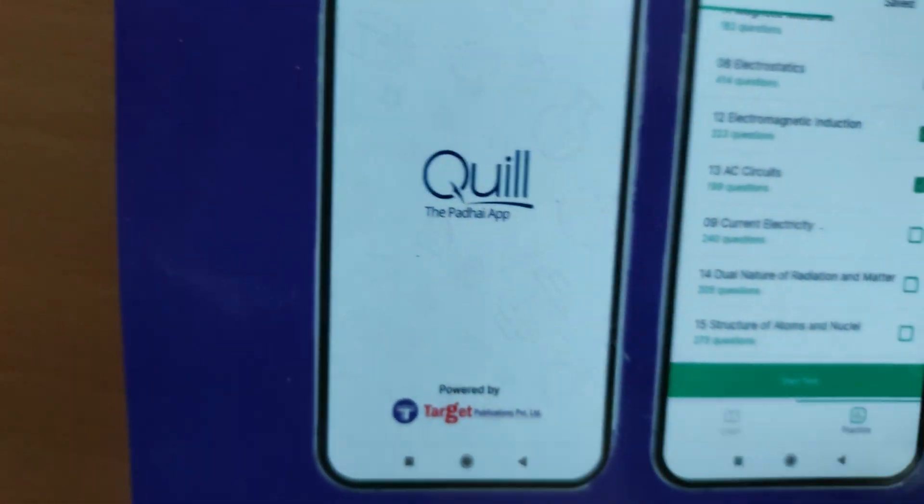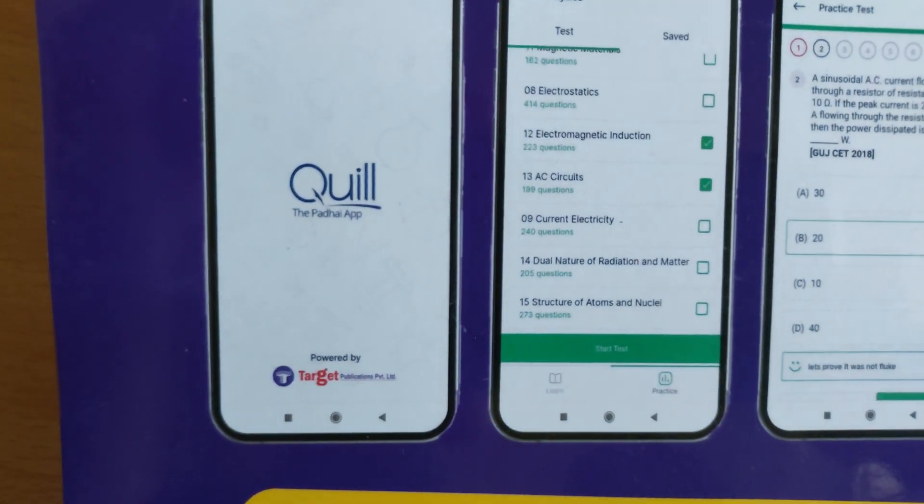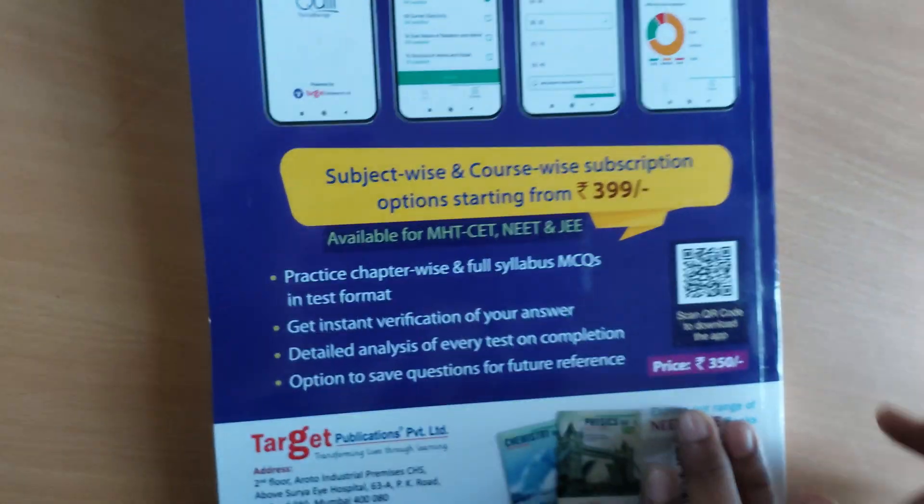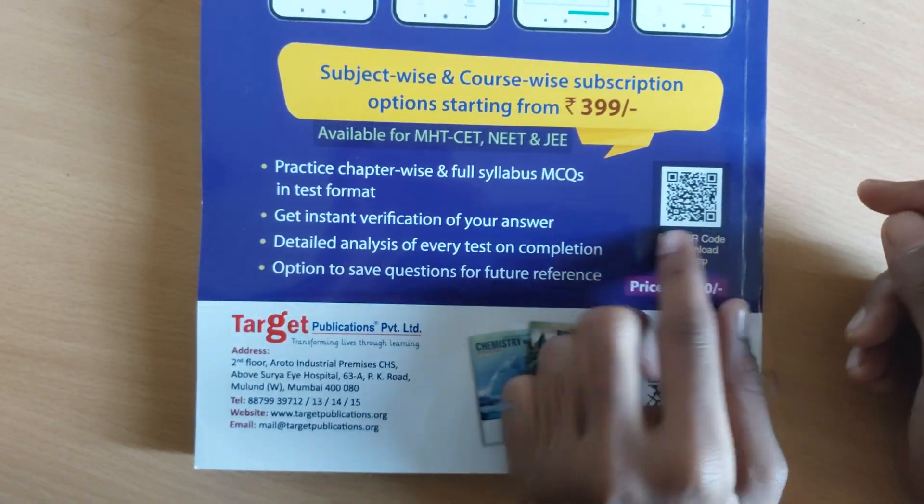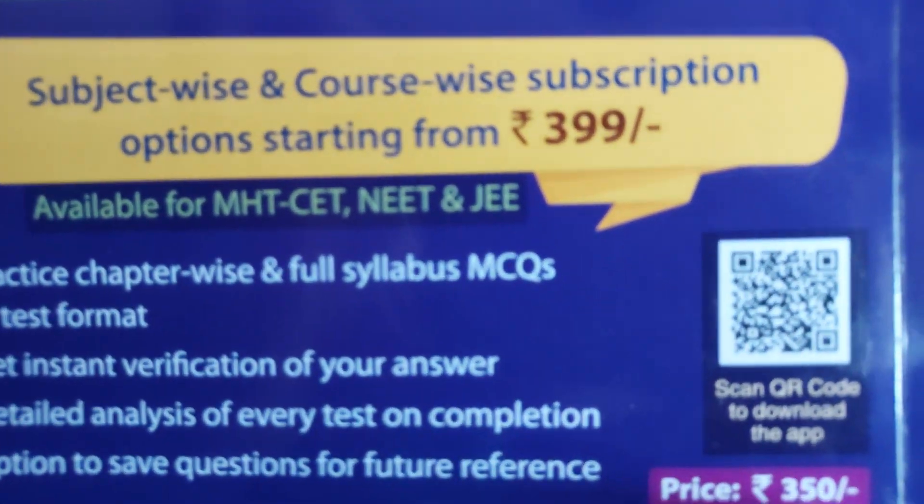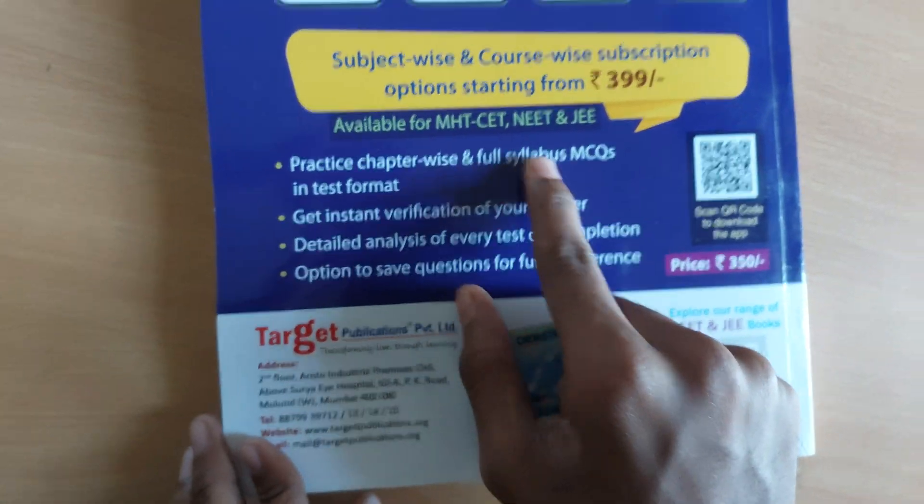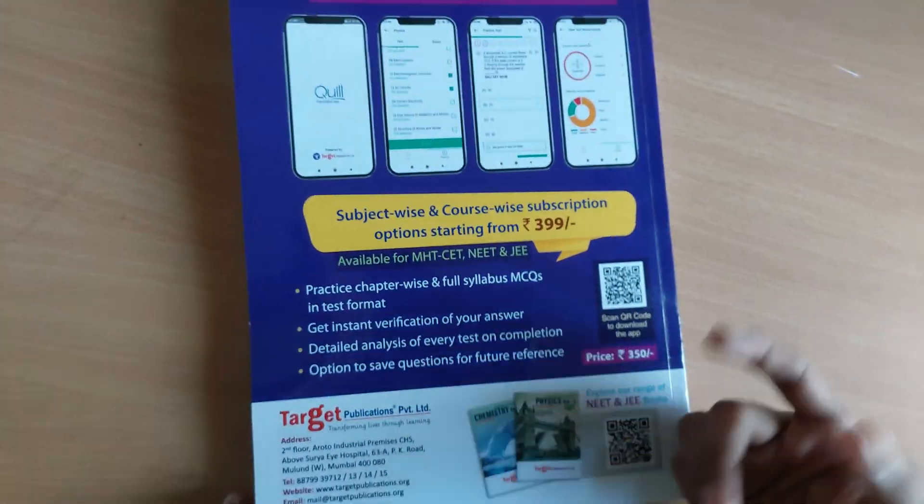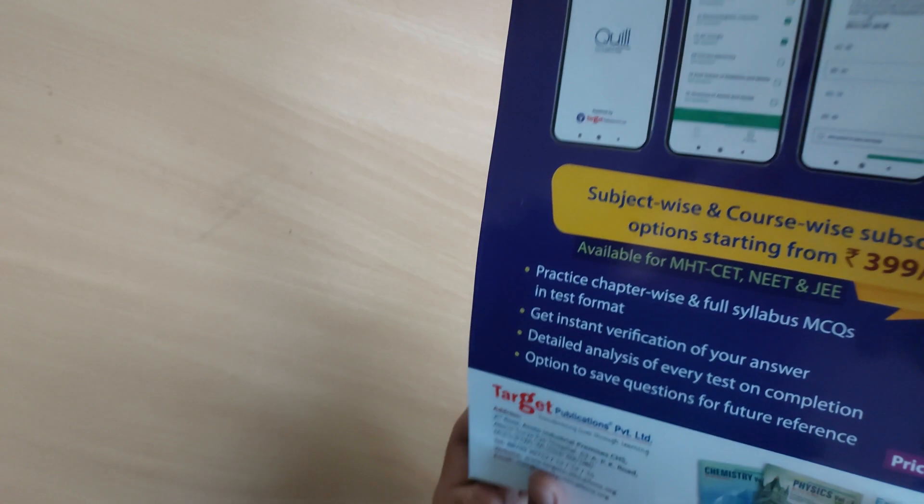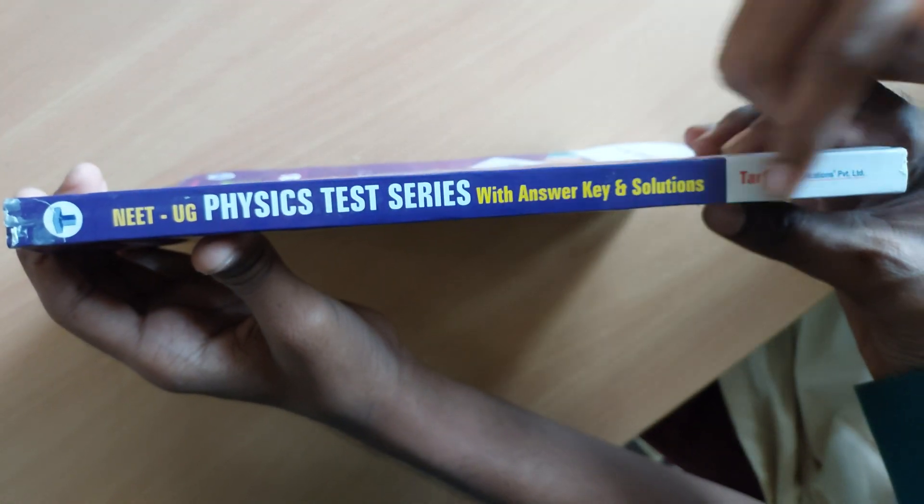This will help us to practice NEET questions. This is the Quill Padai app. By getting this book, we have a useful thing that is with this QR we will get some subscription. It is very useful for our MHT-CET, NEET, JEE. By scanning QR code we can get many types of questions that we are able to practice chapter-wise and full syllabus MCQs and you will get instant answers. This is the book from Target. You will be able to buy this book from our video description links.